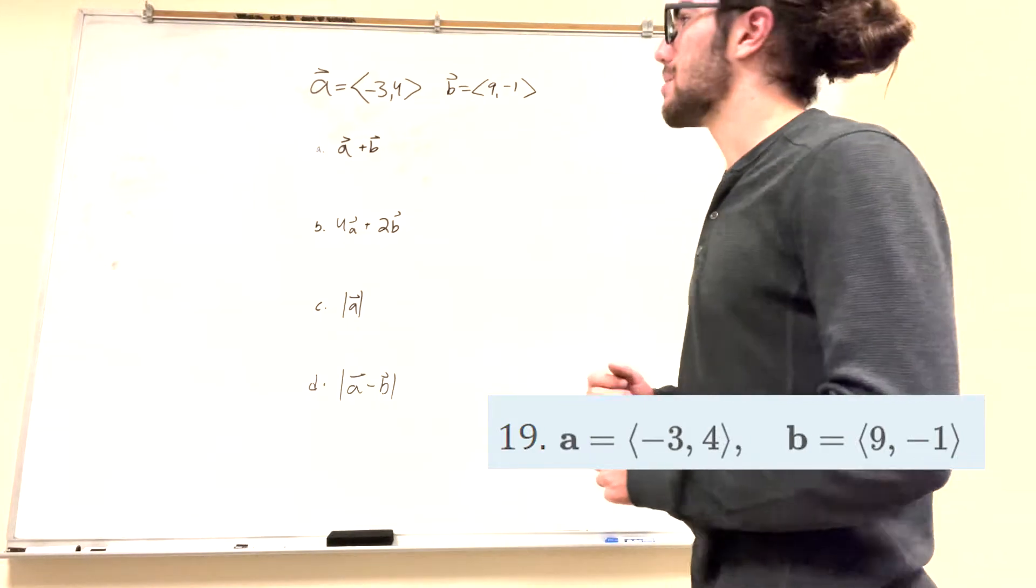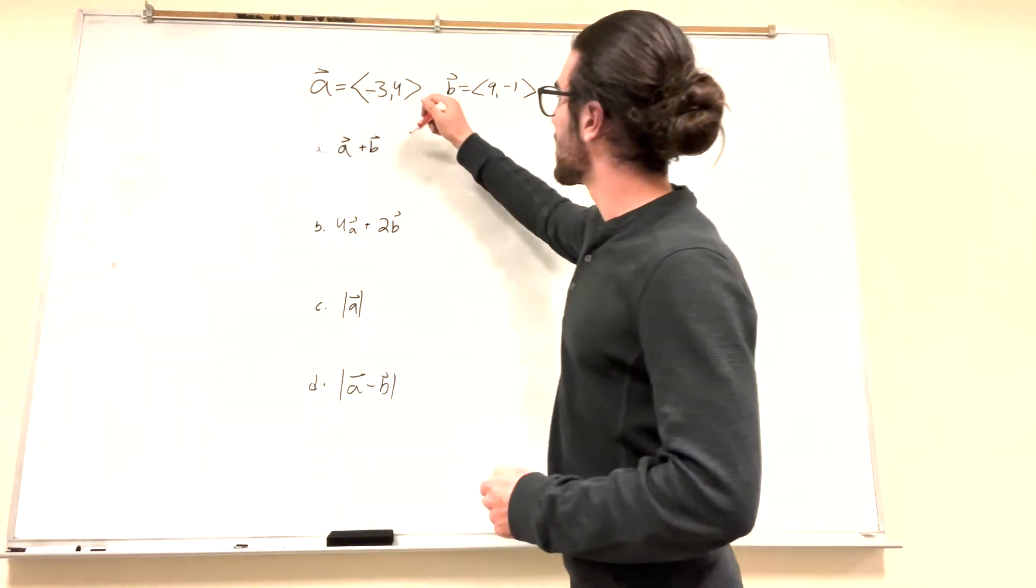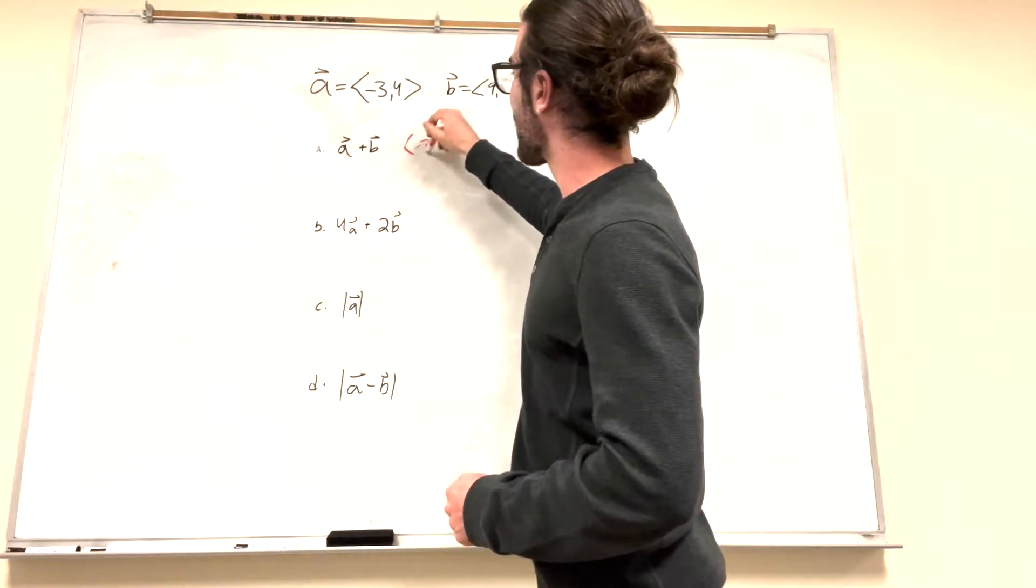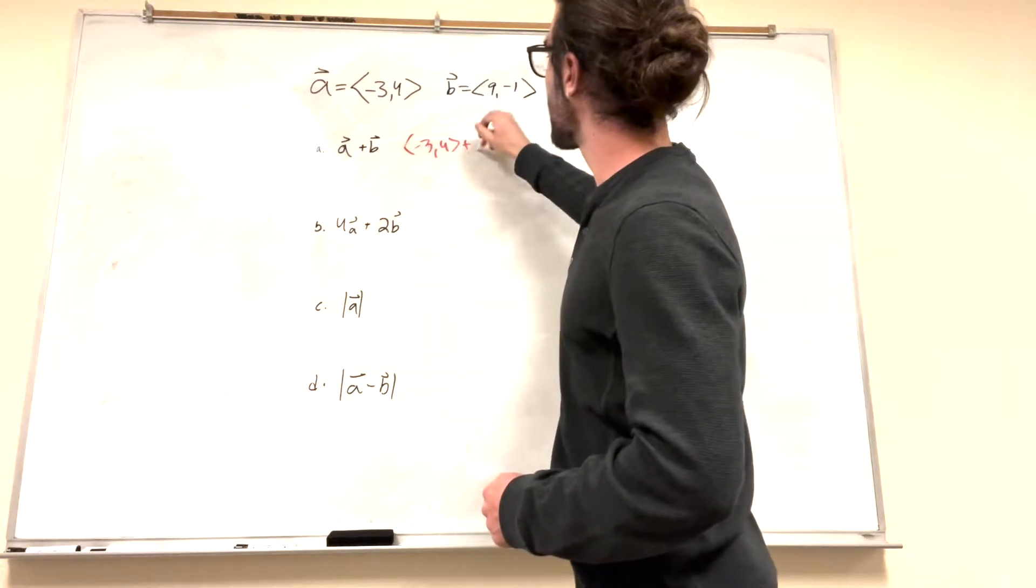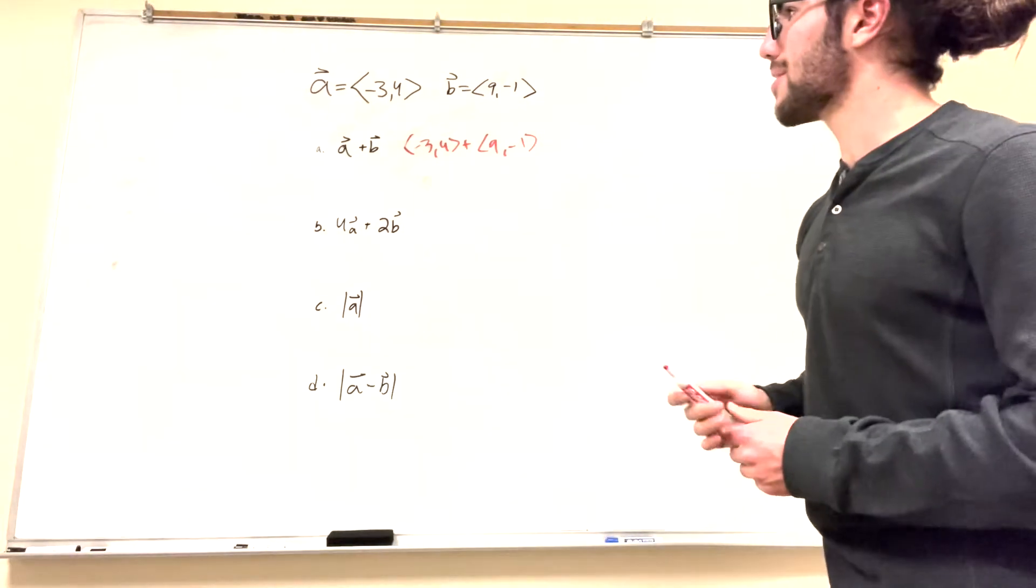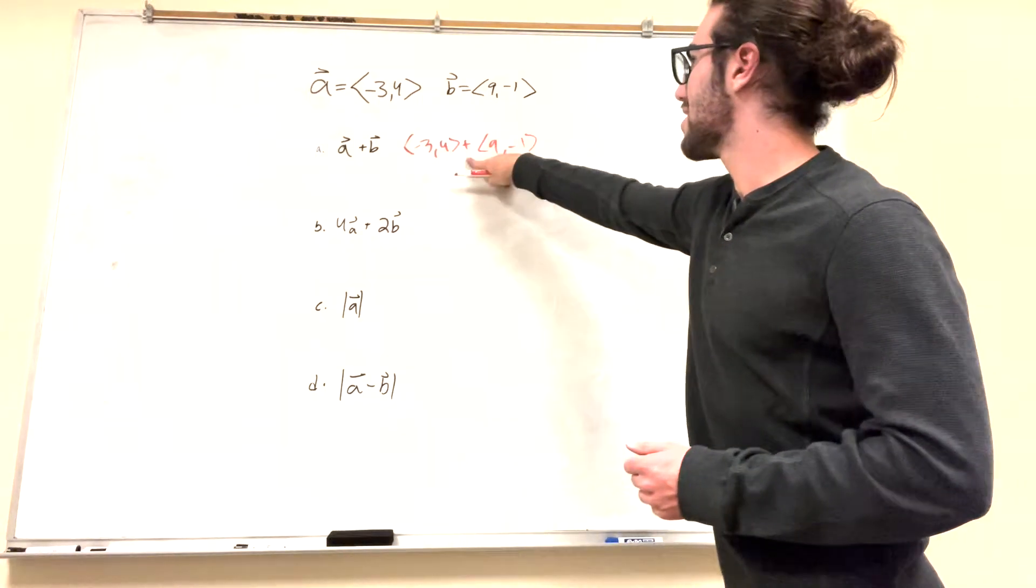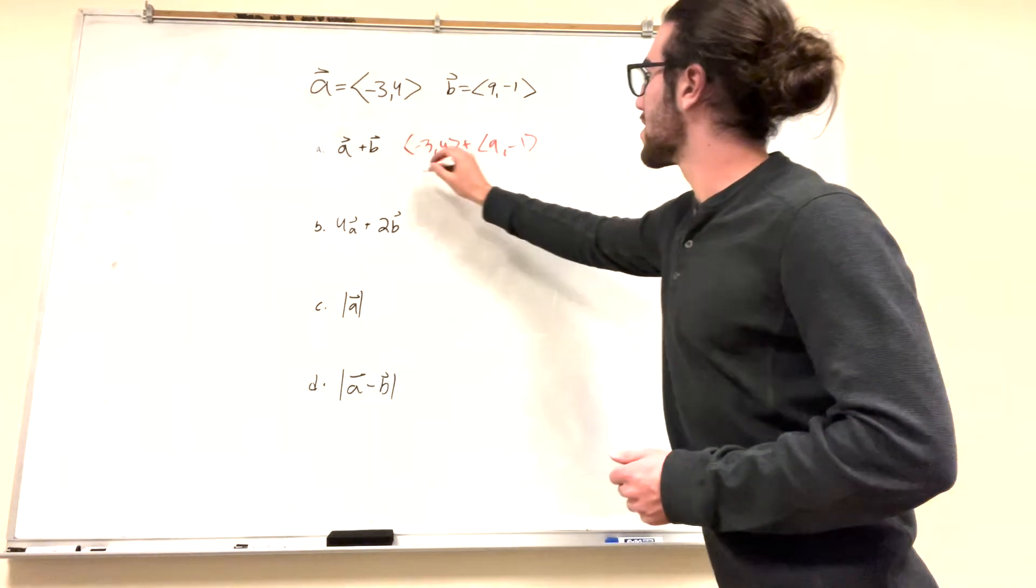All right, so we've got a plus b. This is the hardest calculus problem we've ever solved, ever. So a plus b is going to be negative 3, 4, plus 9, negative 1. So what you're going to do when you're adding vectors is you combine the i values, so the first one, with the j value, or just these two together, and then you add these two together. So this is going to be equal to...